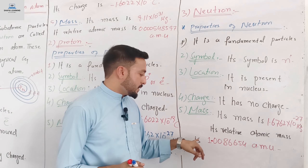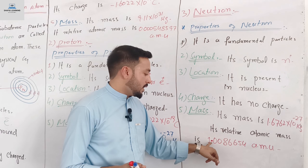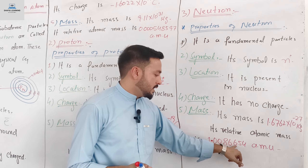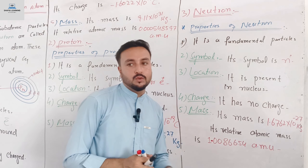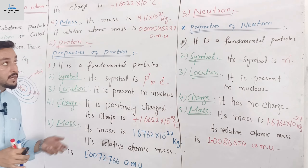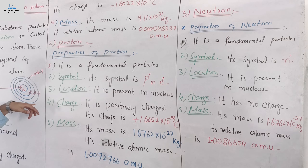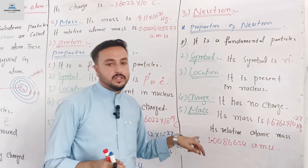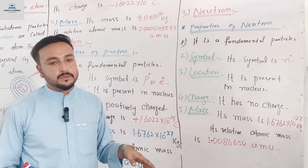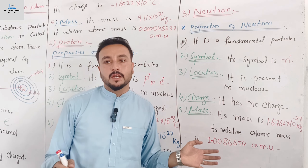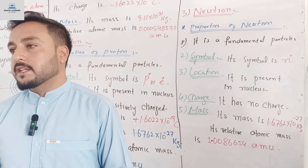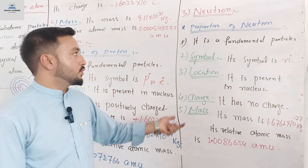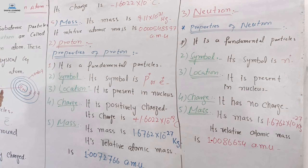The relative atomic mass of the neutron is 1.008665 amu. The proton mass is approximately 1.008665 amu as well.